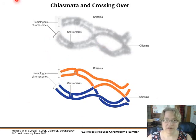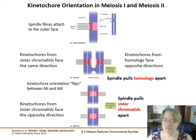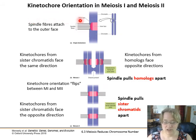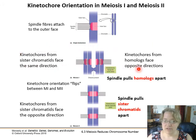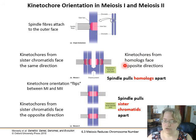The kinetochore is the area where the spindle fibers actually attach to the DNA strands. It has an inner and an outer face — the interface is where the sister chromatids align with each other, and the spindle fibers attach to the outer face. In meiosis one, the sister chromatids' kinetochores face in the same direction because they're being pulled together as a pair — the homologs are pulled together, so kinetochores from homologs face in opposite directions during meiosis one.